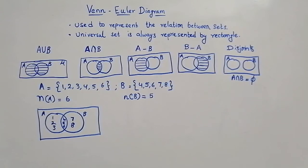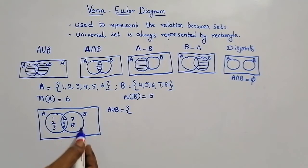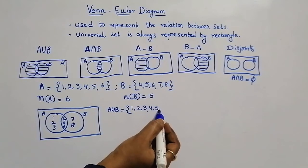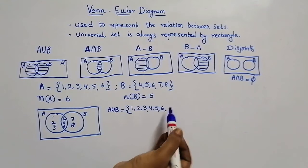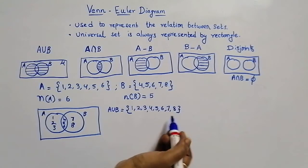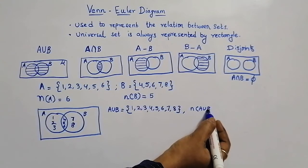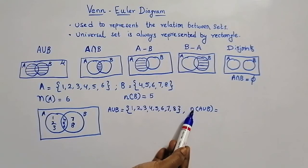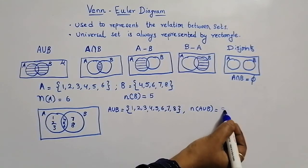Now let us find A union B from this Venn-Euler diagram. A union B includes all elements in A and all elements in B — elements are not repeated. All elements in A are 1, 2, 3, 4, 5, 6, and from B we add 7 and 8 (since 4, 5, 6 are already listed). So A union B = {1, 2, 3, 4, 5, 6, 7, 8}, and N of A union B equals 8.